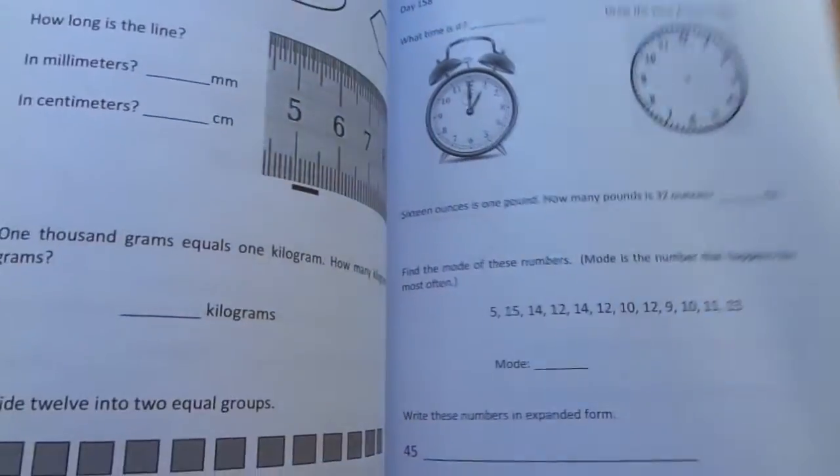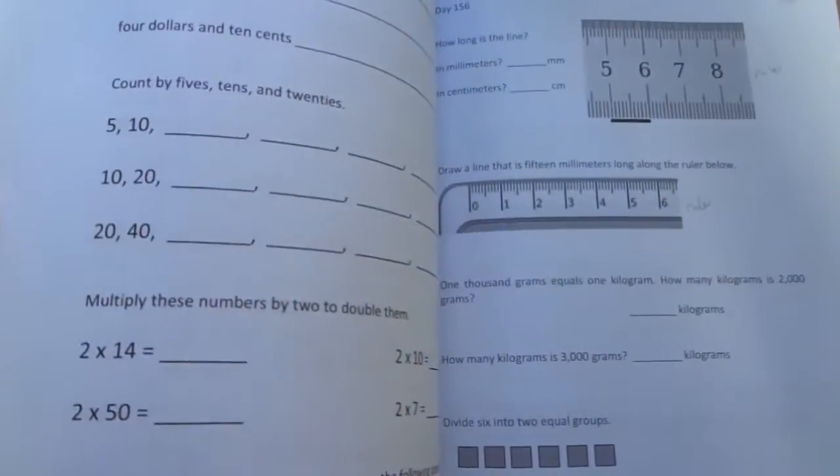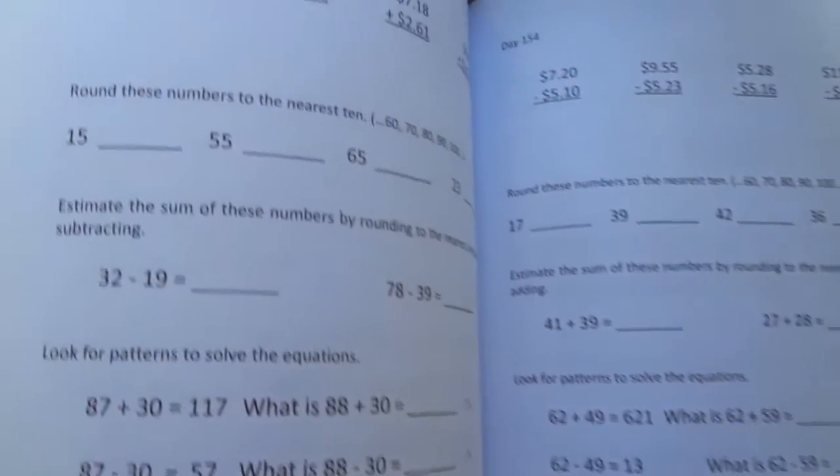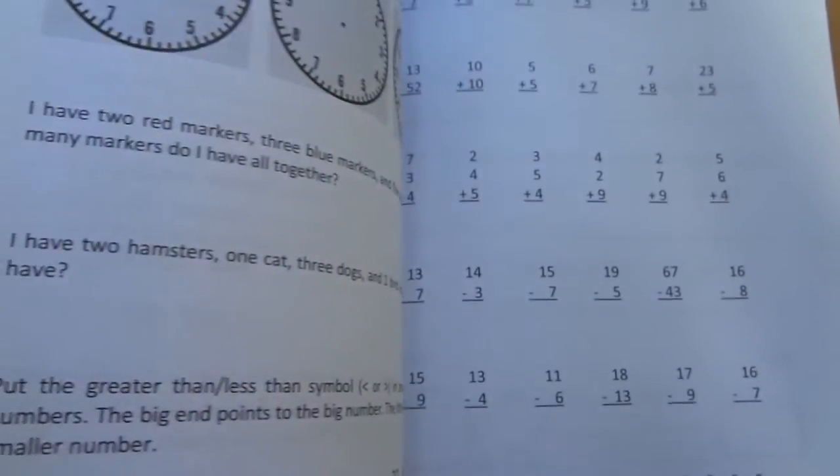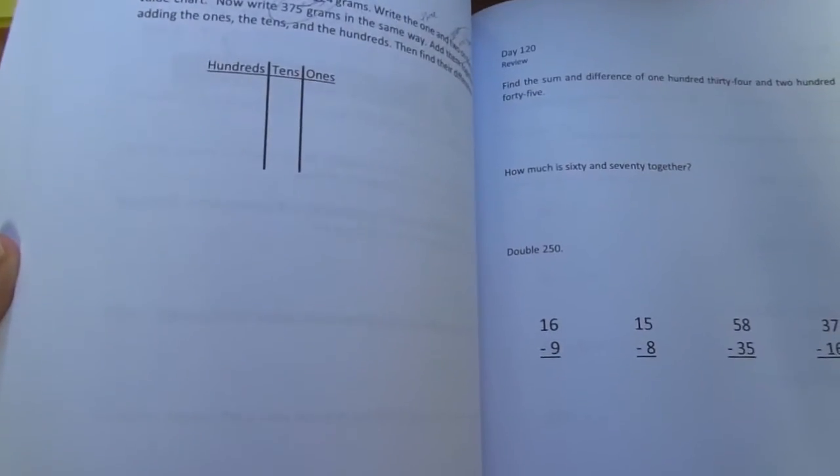There's no borrowing or carrying in the level 1 workbook. Let's see if they do money. It goes up to hundreds. It shows you what it's like.